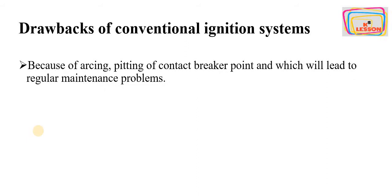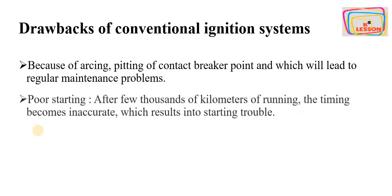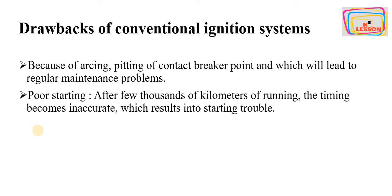Now we will discuss the drawbacks of the conventional ignition system. Because of the arcing and pitting of contact breaker points, we have regular maintenance problems — we need to replace the contact breaker points after intervals of time. Also, after a few thousand kilometers of running, the timing becomes inaccurate, which results in poor starting, so we need to retune the ignition system.